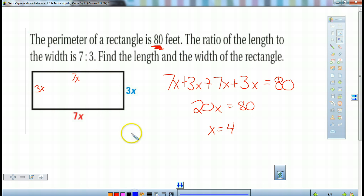Once I have my x equals 4, I can plug them in here. 7 times 4, this side is 28. 3 times 4, this side is 12. So they're looking for our length and my width. My length is 28. My width is 12.